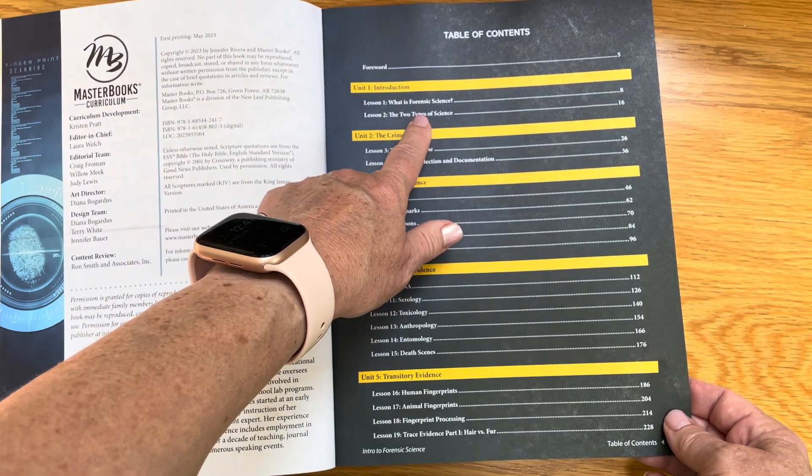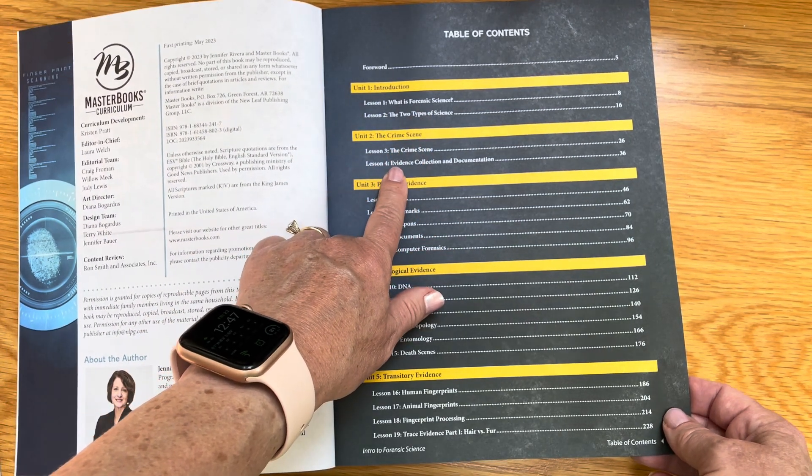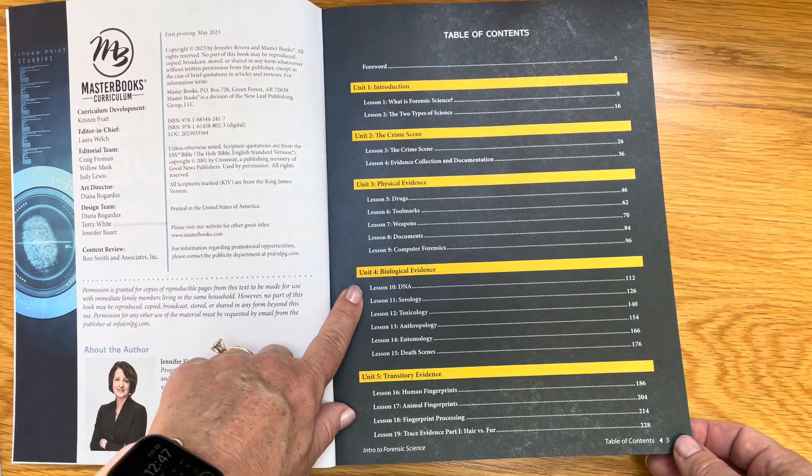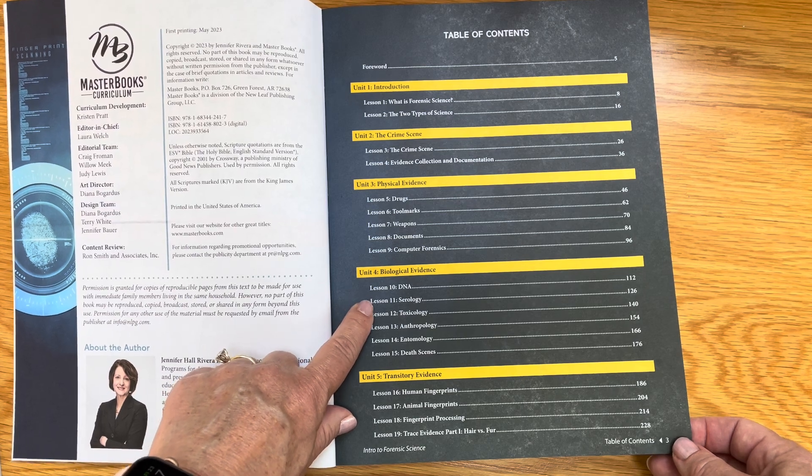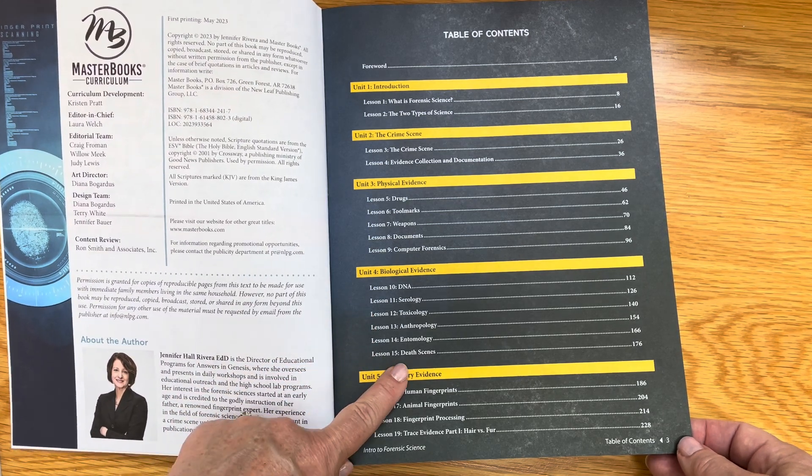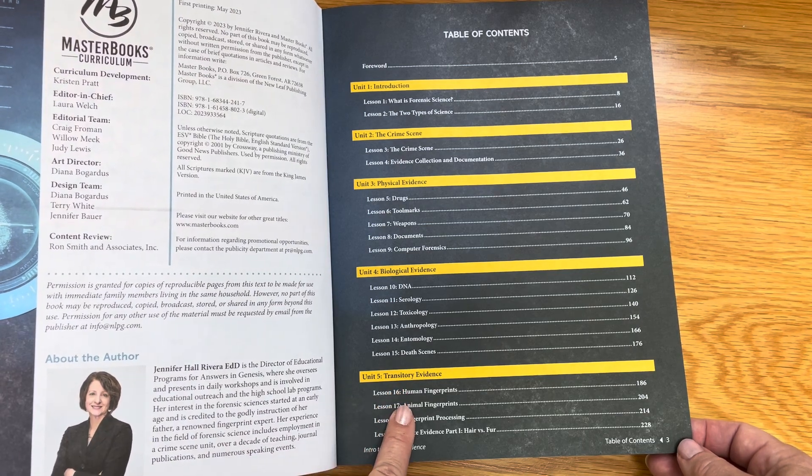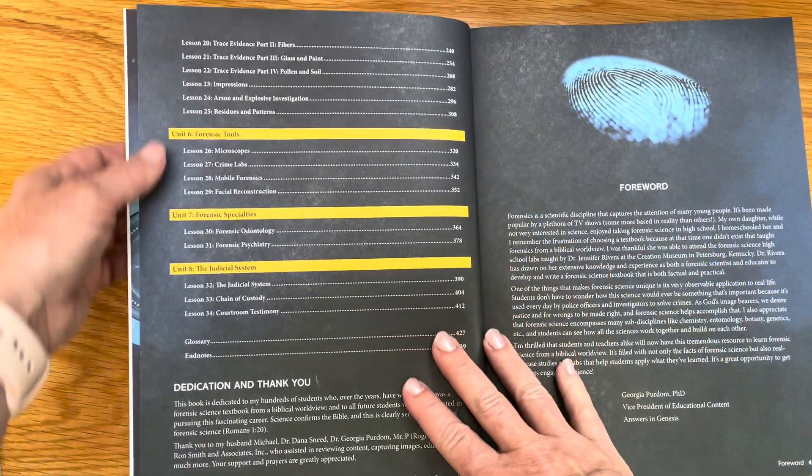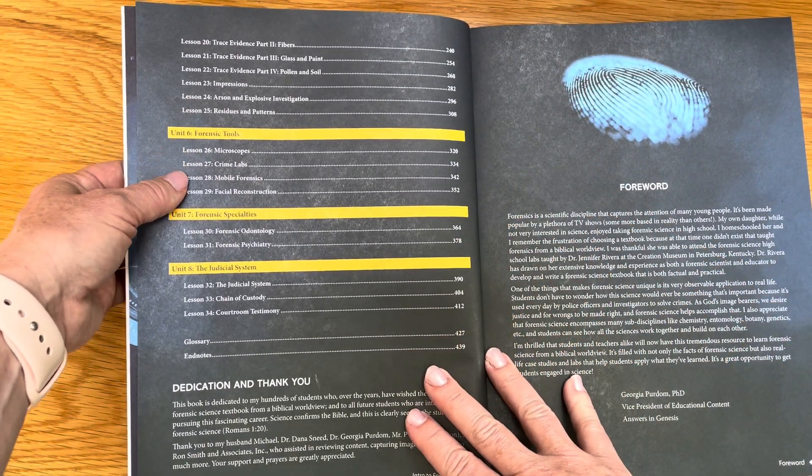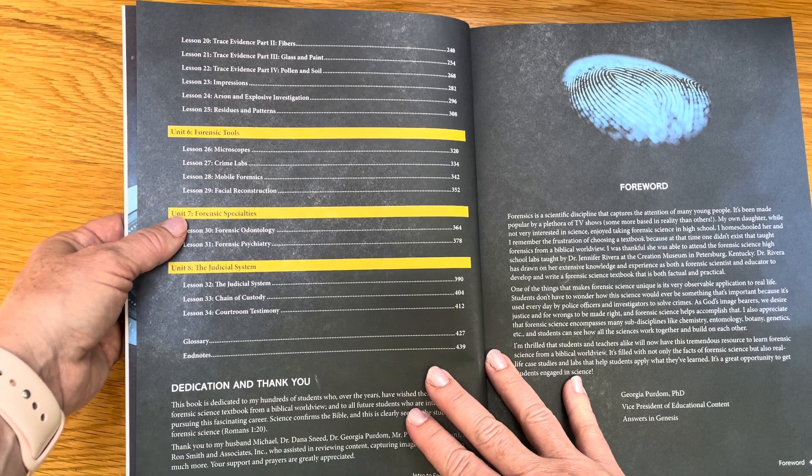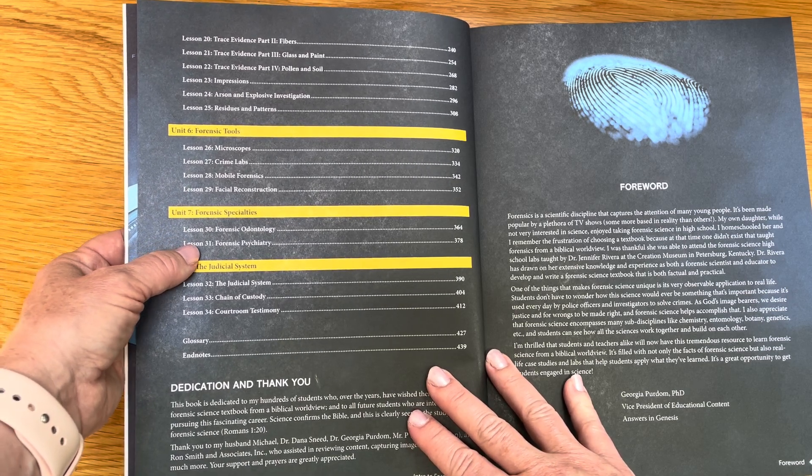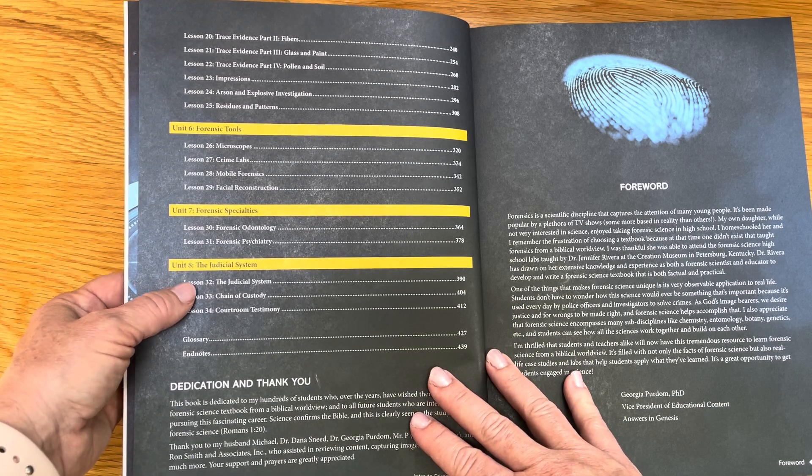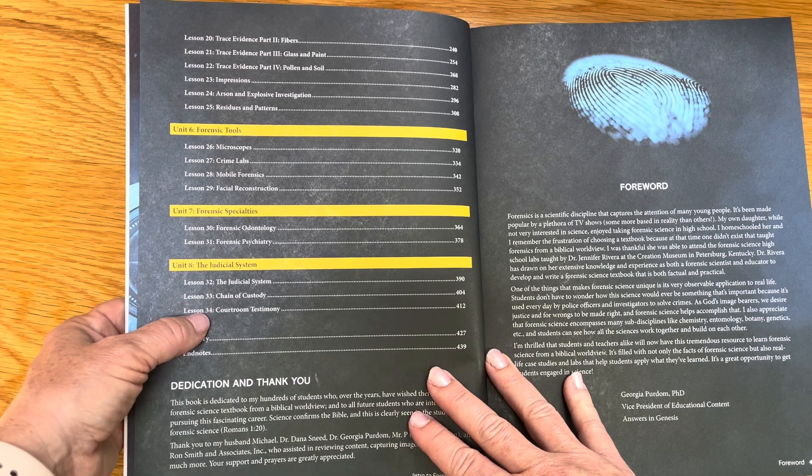You're learning what is forensic science, the crime scene, physical evidence such as drugs, weapons, documents, biological evidence such as DNA, toxicology, death scenes, transitory evidence like fingerprints, then forensic tools like microscopes and crime labs, forensic specialties like odontology and forensic psychiatry, and then talking about the judicial system like chain of custody and courtroom testimony.